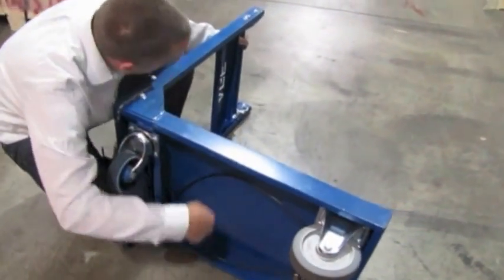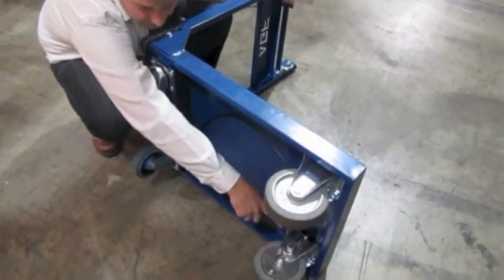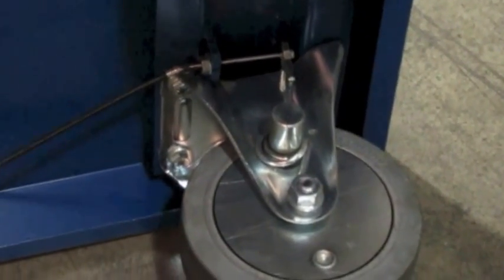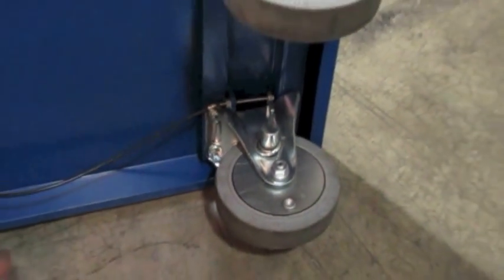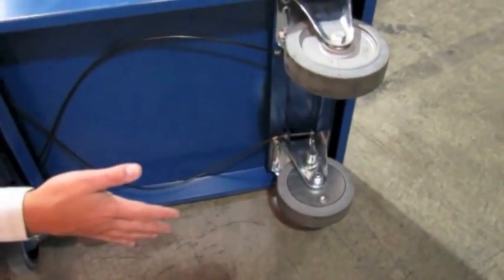There are wires tied to the handle here. As you can see, this movement here is releasing the internal drum brake. And as I release it, or if the person utilizing the cart lets go, the caster will brake.